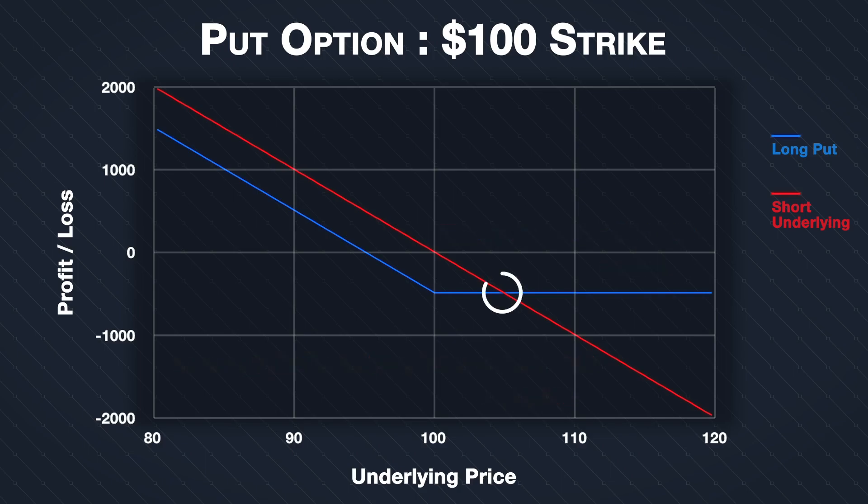The point at which these two lines intersect is $105. This can be calculated as the current stock price of $100 plus the premium per share of $5 paid for the option.